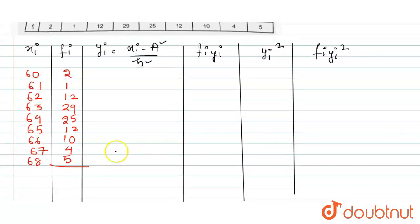frequency: 2, 1, 12, 29, 25, 12, 10, 4, and 5. So we need to find the sum of the frequency, that will be equal to summation fi, so that equals to 100. Now let's move on. Here the value of a, that is, we have taken assumed mean from the given observation, that is let a equals to 64, and the value of h equals to 1 because the class size difference is 1.